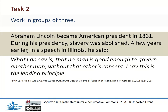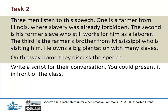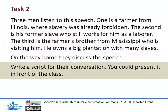Work in groups of three. Abraham Lincoln became American president in 1861. During his presidency, slavery was abolished. A few years earlier, in a speech in Illinois, he said: 'What I do say is, that no man is good enough to govern another man, without that other's consent. I say this is the leading principle.' Three men listened to this speech: one is a farmer from Illinois, where slavery was already forbidden; the second is his former slave, who still works for him as a laborer; the third is the farmer's brother from Mississippi, who is visiting him — he owns a big plantation with many slaves. On the way home, they discuss the speech. Write a script for their conversation. You could present it in front of the class.